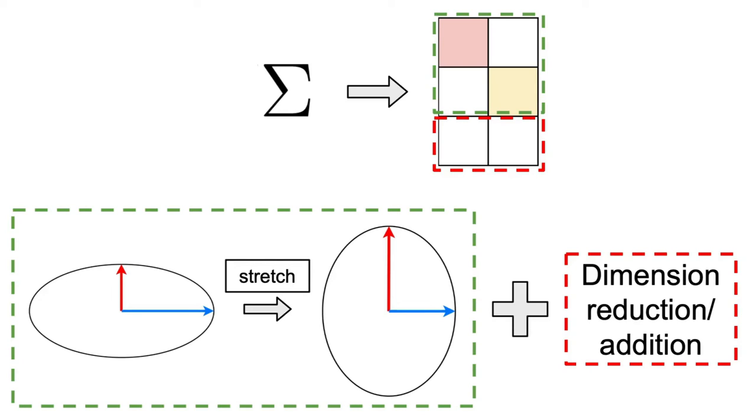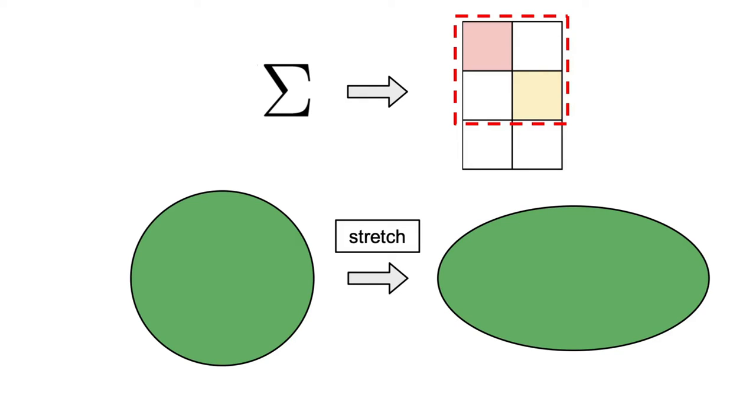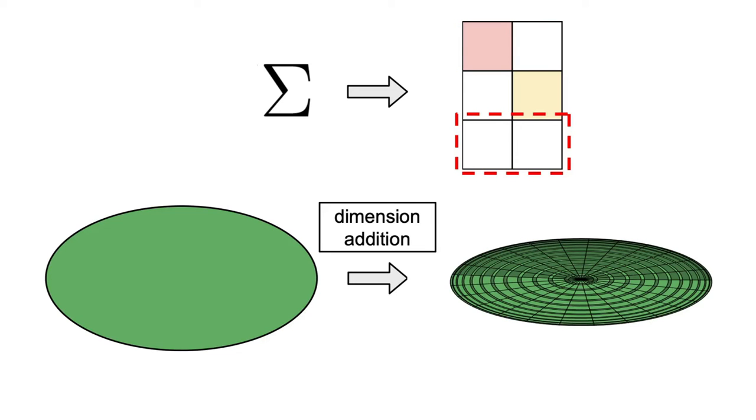To better understand what the Sigma matrix does, let's consider an example. Imagine that we have the following 3x2 matrix Sigma and the following circle in the 2D plane we want to project. The first thing we do is stretch it along the x and y dimensions using the singular values, and then add the z dimension.